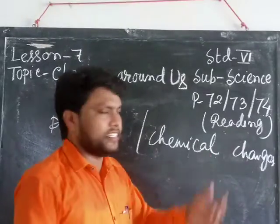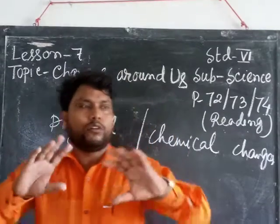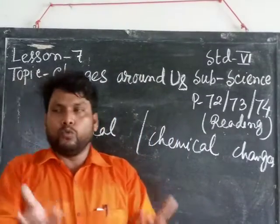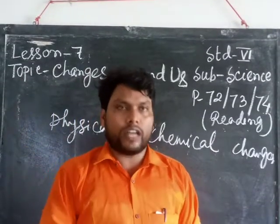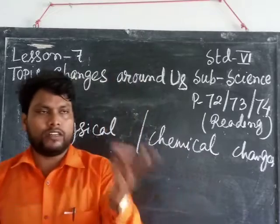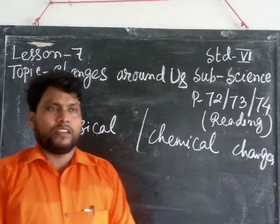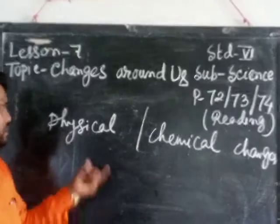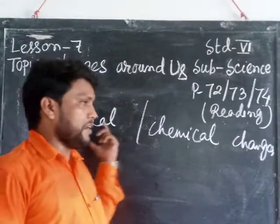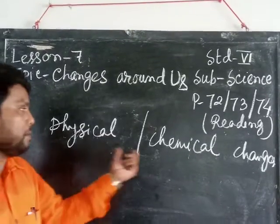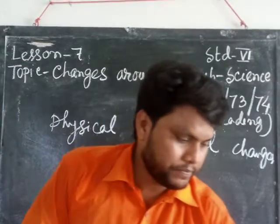But in case of chemical changes — for example, when you burn coal or wood, the wood or coal will change into carbon dust. The carbon dust will not change back into coal or wood. So this type of change is called chemical changes. In physical changes, the physical properties can be changed, but in case of chemical changes, the chemical properties will be changed.